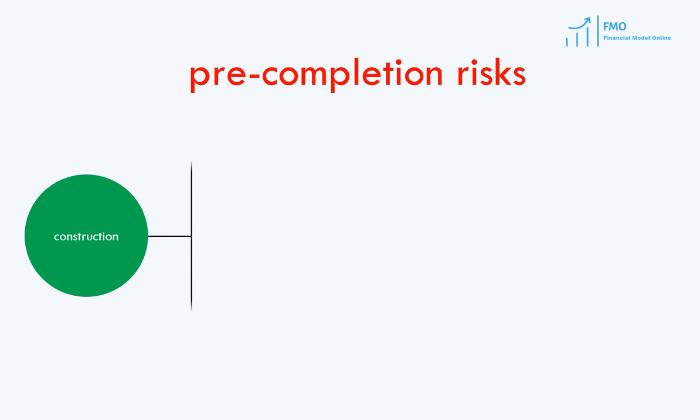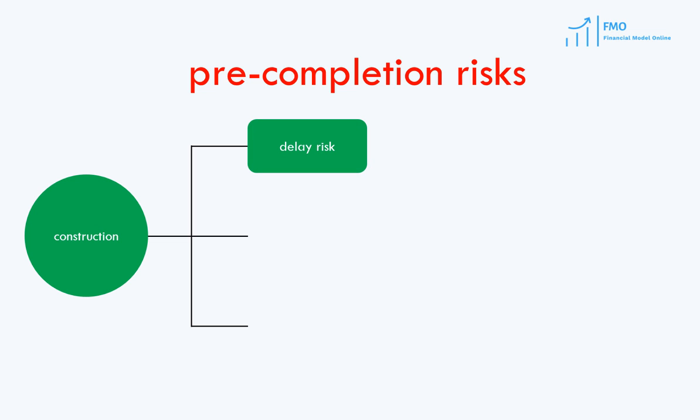When the project enters the construction stage, there are three major risks. First is the delay risk — will the project be built on time? If the project is delayed, the lenders will not be paid according to the agreed debt repayment schedule, the buyers will not receive the project's output as per the agreed schedule, the suppliers will not sell their product as per the agreed schedule, and the list of problems goes on. Project finance is a highly structured transaction where each step or misstep may generate a multi-million dollar liability as per the project agreements.